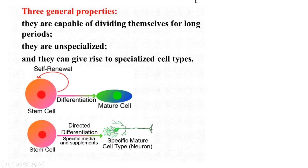Stem cells are capable of all these things because of three main properties: they are capable of dividing themselves for long periods — continuous cell division; they are unspecialized, meaning they are not specific like a hepatocyte, not performing a particular function; and they can give rise to specialized cells. Stem cells are basically unspecialized cells that can give rise to specialized cells.